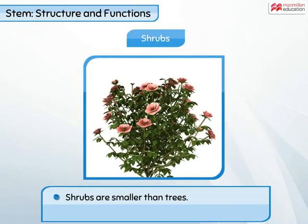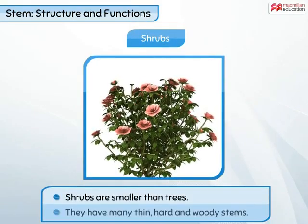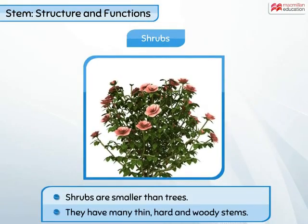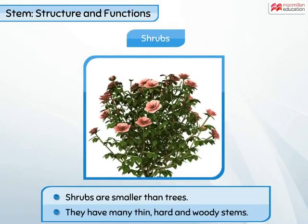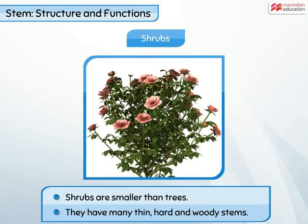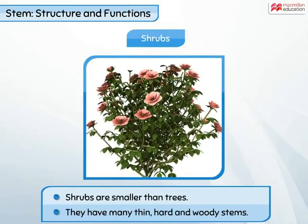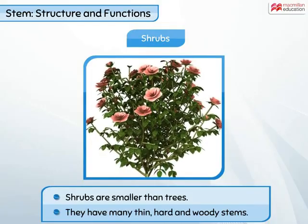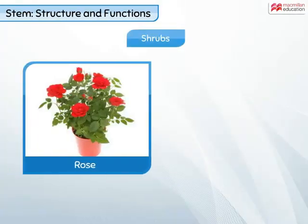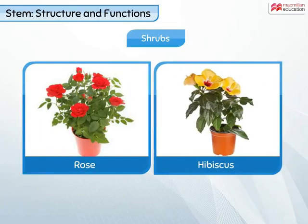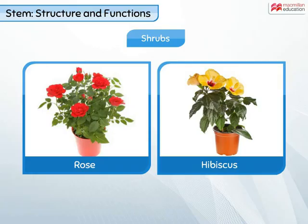Plants that are smaller than trees and have many thin, hard, and woody stems are called shrubs. Rose and hibiscus are some of the common shrubs.